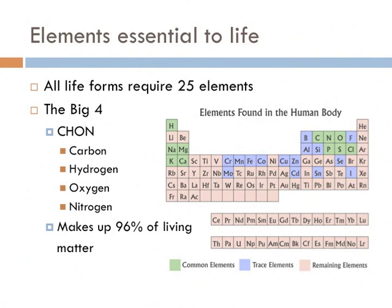There are certain elements that are essential to life. Here we see all the elements that we know of. All life forms require 25 elements. The big four are CHON: carbon, hydrogen, oxygen, and nitrogen. Those four elements make up over 96% of living matter within our bodies and anything else that's alive.